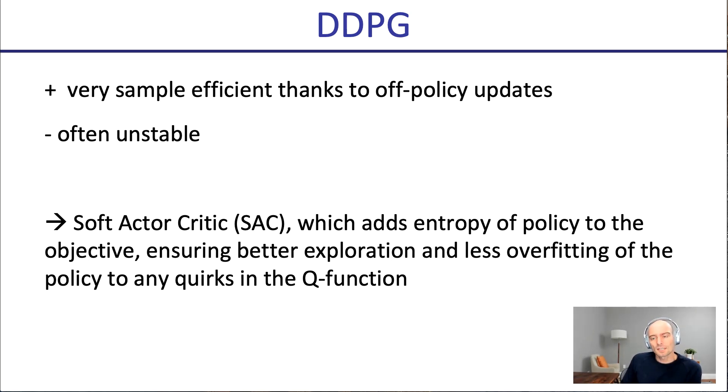So it's nice, very sample efficient, thanks to off-policy updates. The downside of DDPG transition has been that it can be a bit unstable. And that's where soft actor critic has come in and has in many places become the method of choice. It stabilizes things by adding entropy in the objective. So it's going to be a max ent formulation. And this will ensure better exploration and less overfitting of the policy. Of course, you need to make sure that your entropy doesn't decay too quickly, otherwise you don't get that exploration.